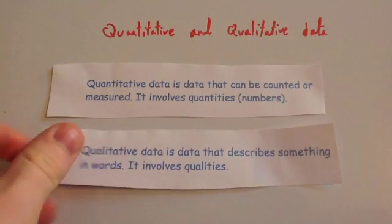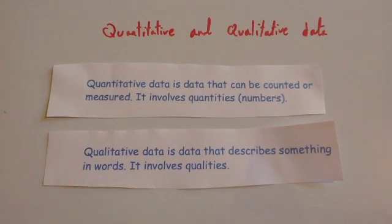Whereas qualitative data is data that describes something in words. It involves qualities or descriptions.